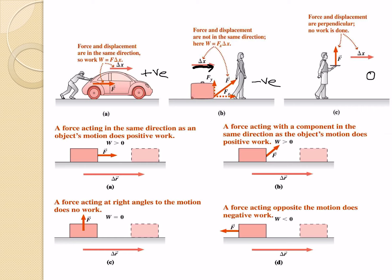This is reiterated in figures A, B, C and D as well. When force and displacement are in the same direction, work is greater than zero — positive. Even if there's a tilt and they're not directly aligned as in scenario A, as long as they're in the same direction, work is still positive. When they are perpendicular, there's nothing happening and work done is zero. And when they're in opposite directions, work is negative.